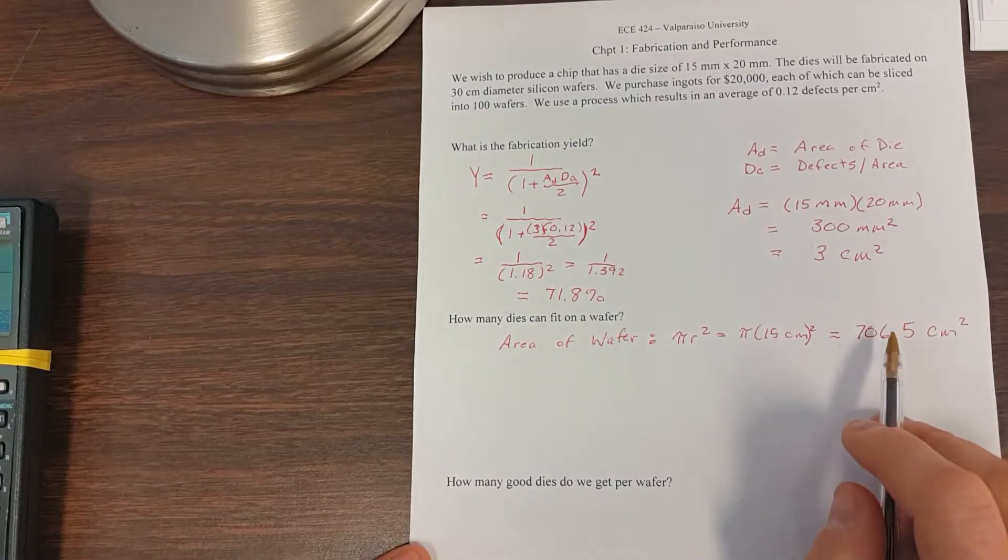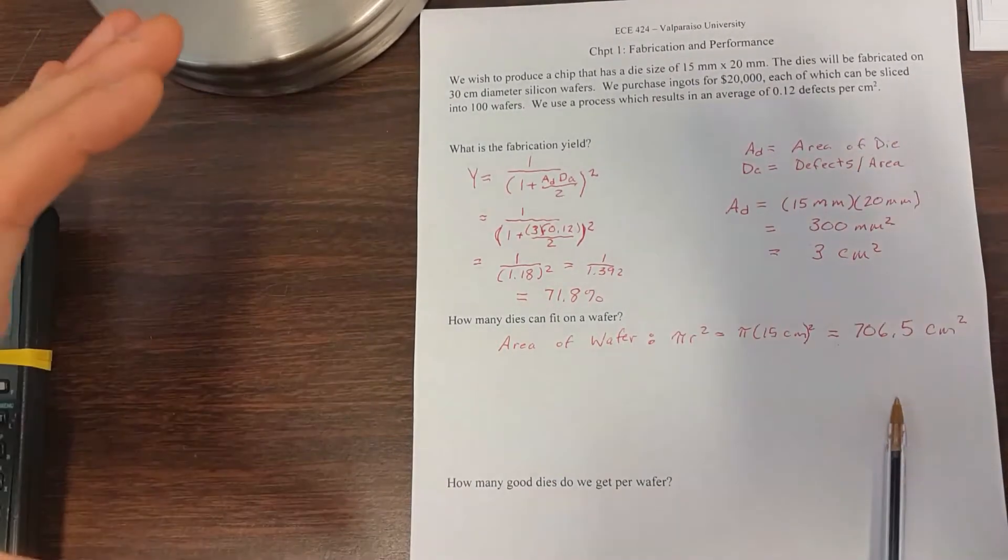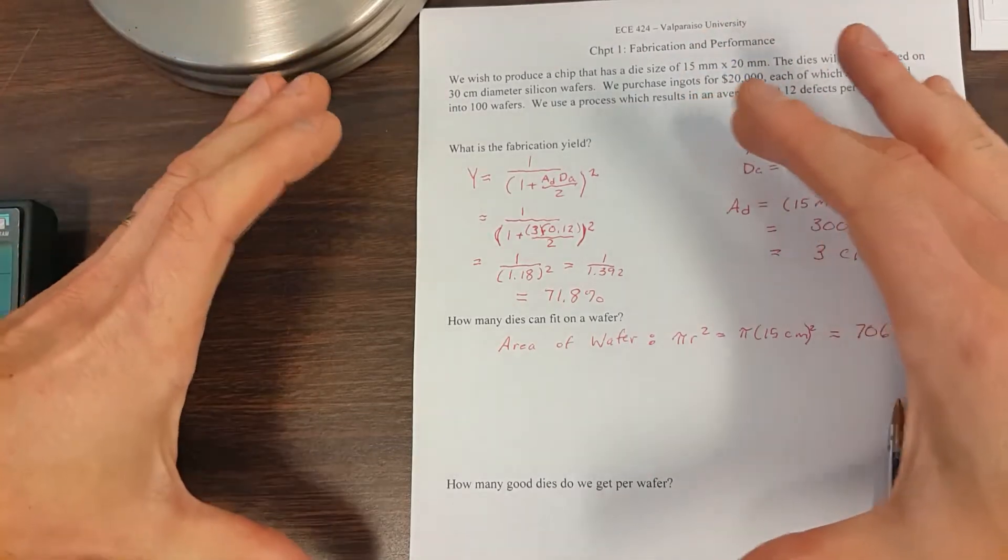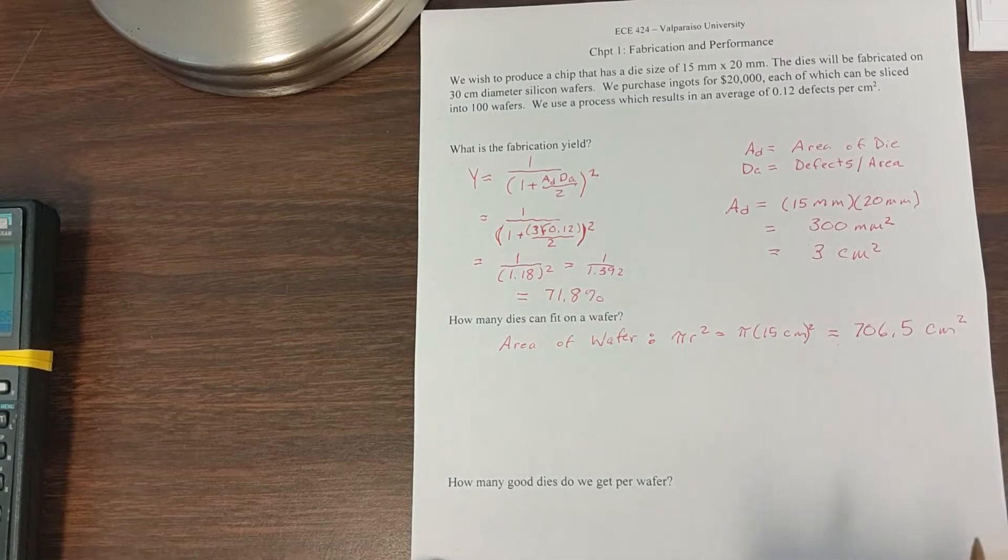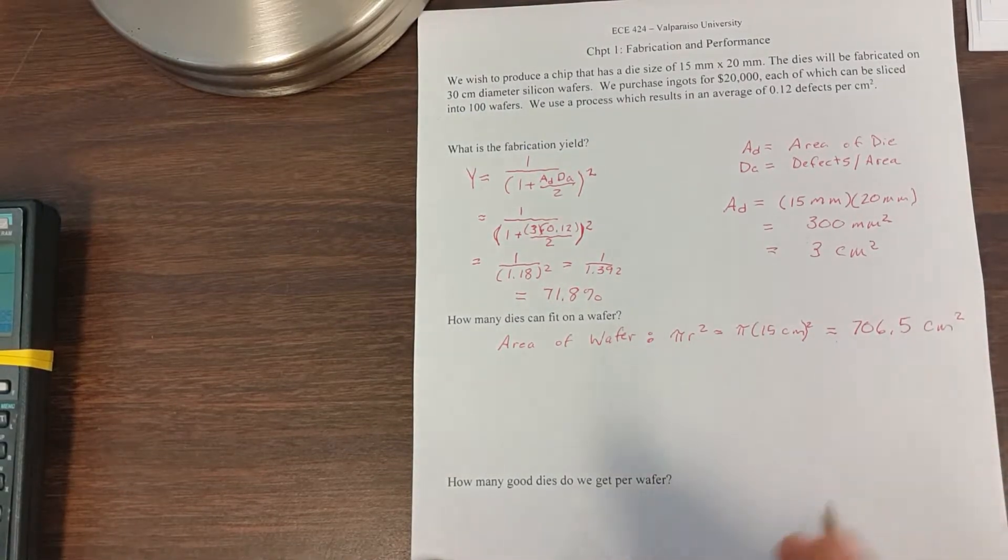That's the area of the wafer. So again, you think about, okay, it's about 15 centimeters. That's about, I can't even get it, about here. Okay, yeah, 706 centimeters squared. Yeah, that seems about right.